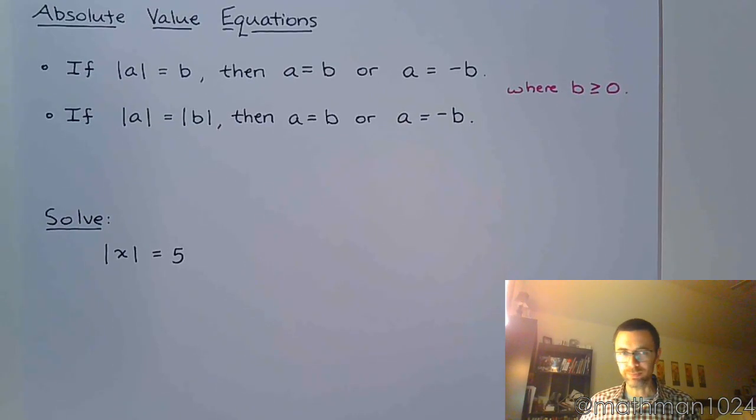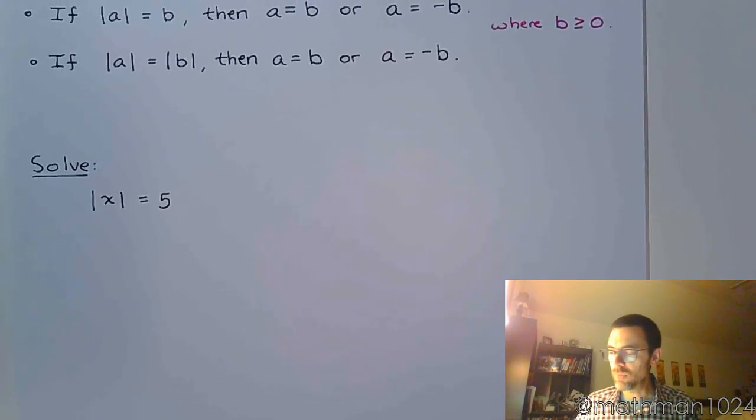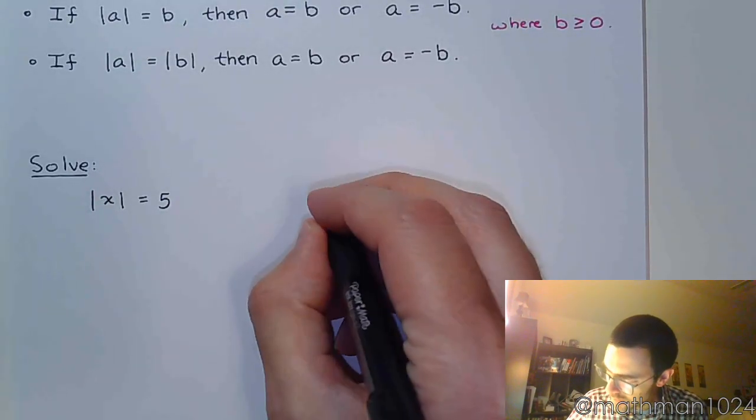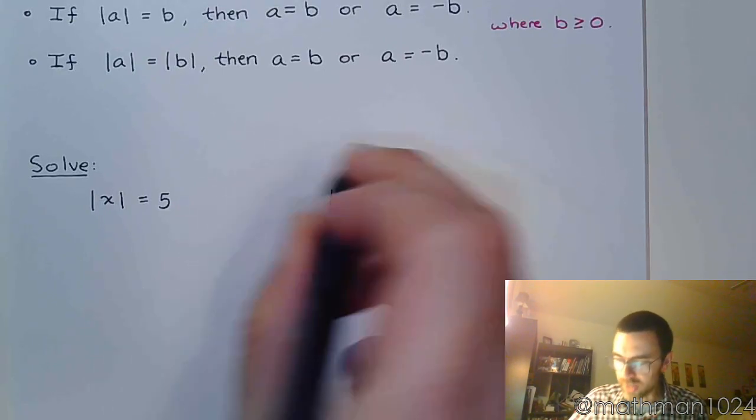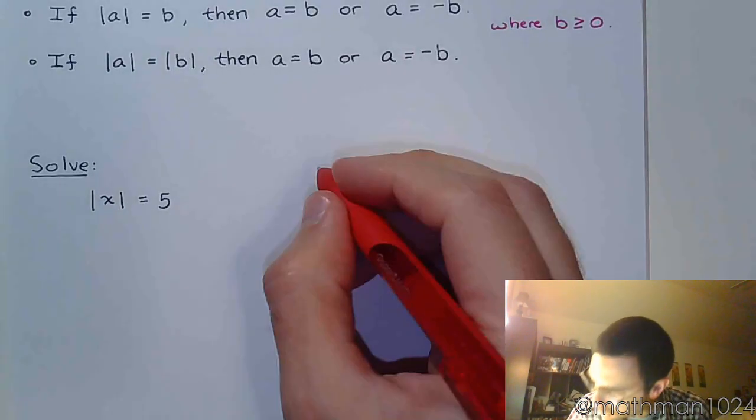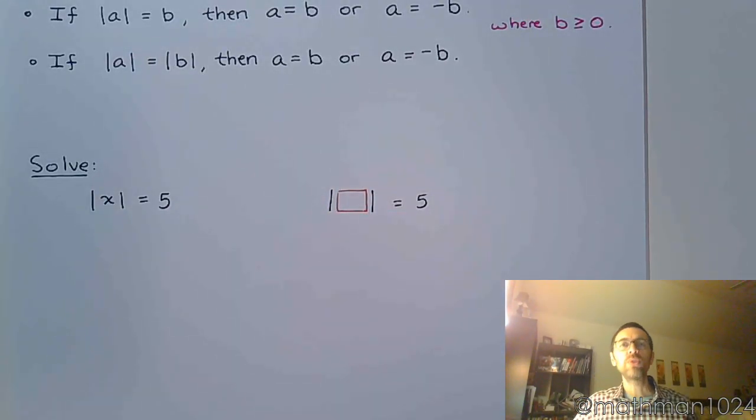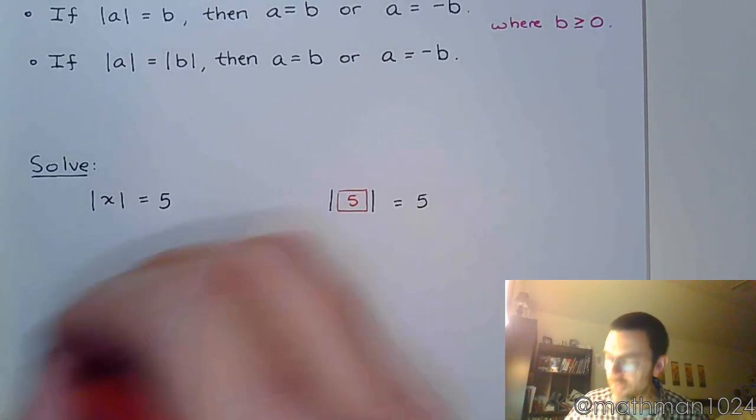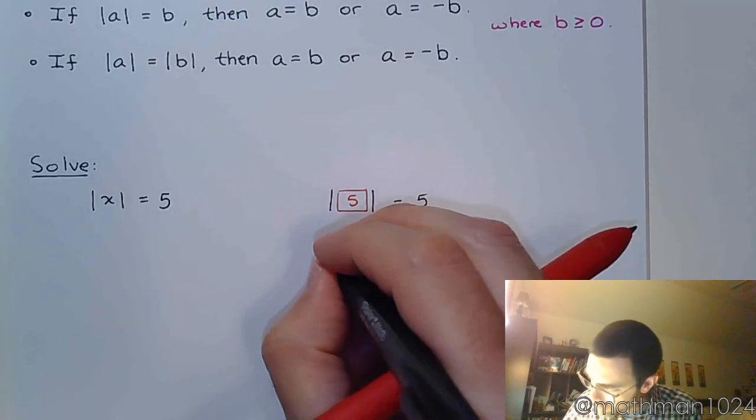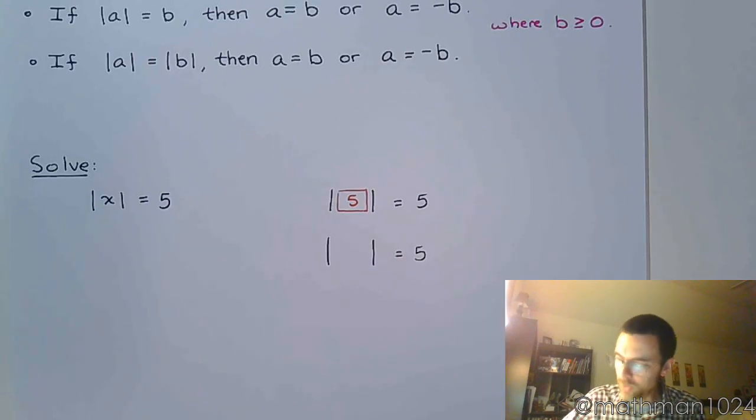Let's look at this first example here. We have the absolute value of x is equal to five, and I want you to think about what this would look like if I just wrote the absolute value is equal to five, and then you had to fill in the blank with a number that would make that a true statement. Well, you've got two options here. You could plug in five, and the absolute value of five gives you five, but there is another way that we could answer this.